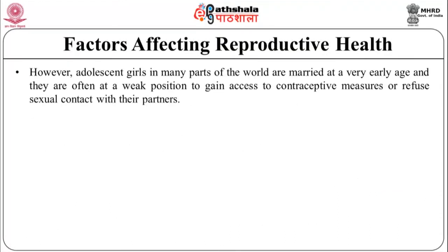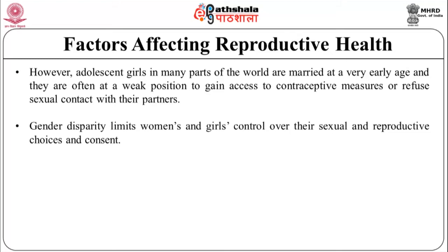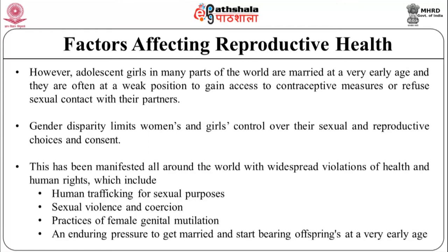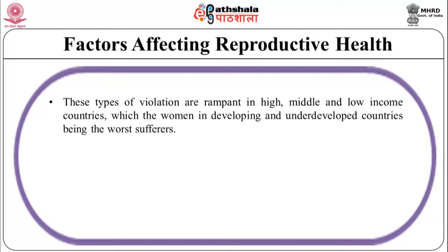However, adolescent girls in many parts of the world are married at a very early age and they are often in a weak position to gain access to contraceptive measures or refuse sexual contact with their partners. Gender disparity limits women and girls' control over their sexual and reproductive choices and consent. This has been manifested all around the world with widespread violations of health and human rights which include human trafficking for sexual purposes, sexual violence and coercion, practices of female genital mutilation and enduring pressure to get married and start bearing offspring at a very early age. These types of violations are rampant in high, middle and low income countries, with women in developing and underdeveloped countries being the worst sufferers.